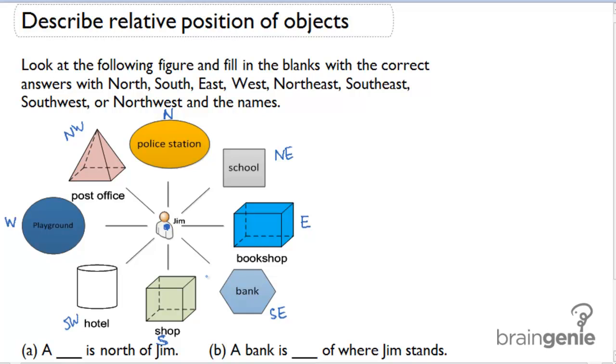Part A says a blank is north of Jim. If I look at where Jim is and look directly north, I see that there is a police station right there. There's a police station north of Jim. So I'm going to write that in.